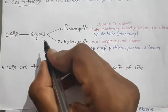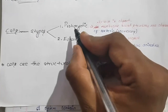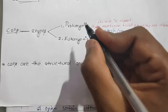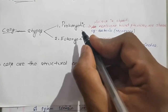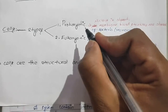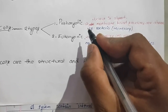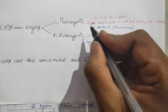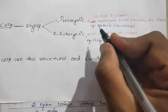Cells are mainly divided into two types: prokaryotic cells and eukaryotic cells. 'Pro' means primitive and 'karyotic' means nucleus. Prokaryotic cells won't have a nuclear membrane, and membrane-bound organelles are absent in prokaryotic cells.